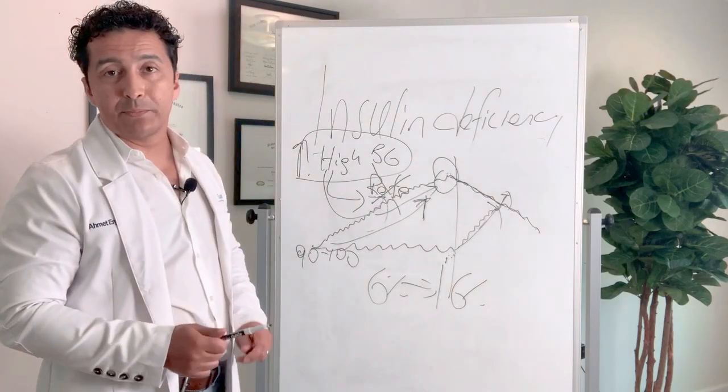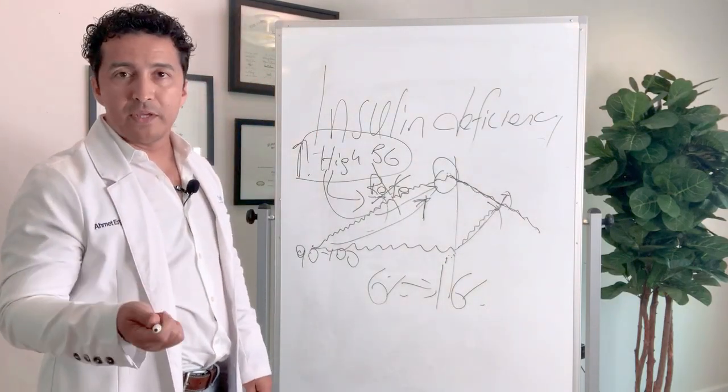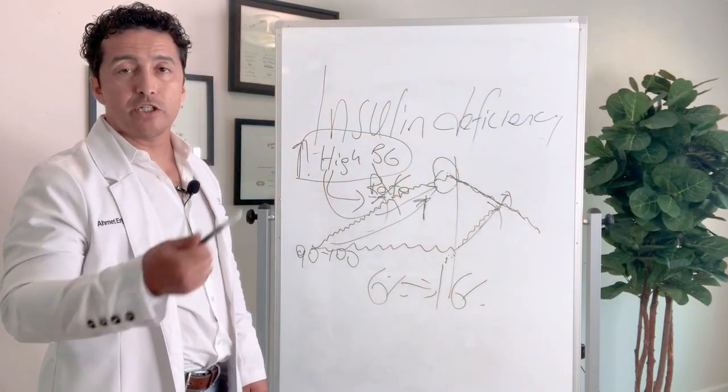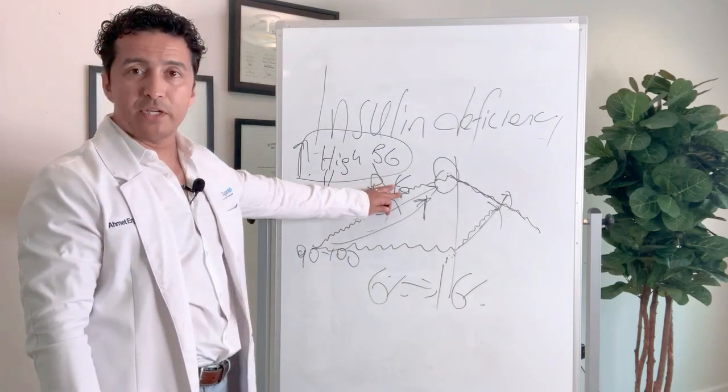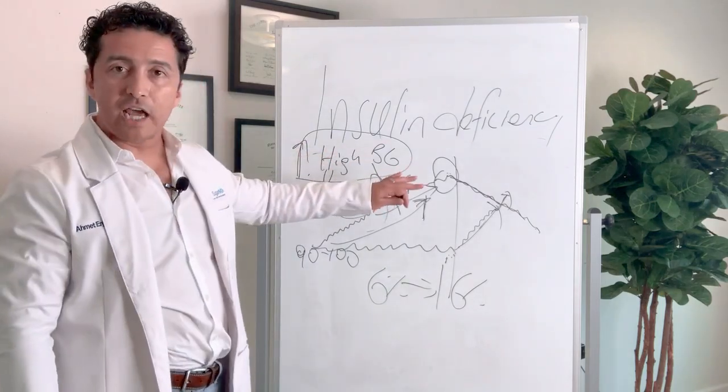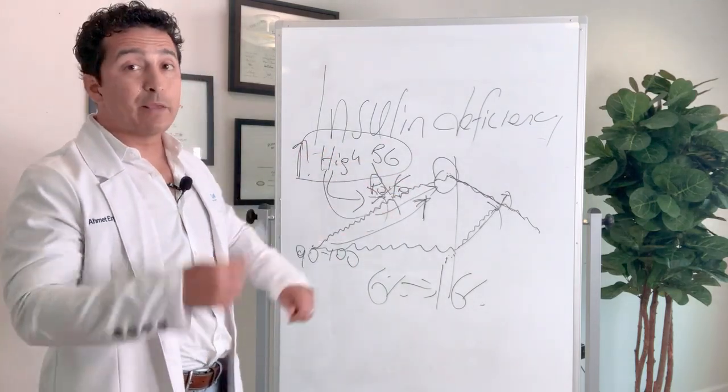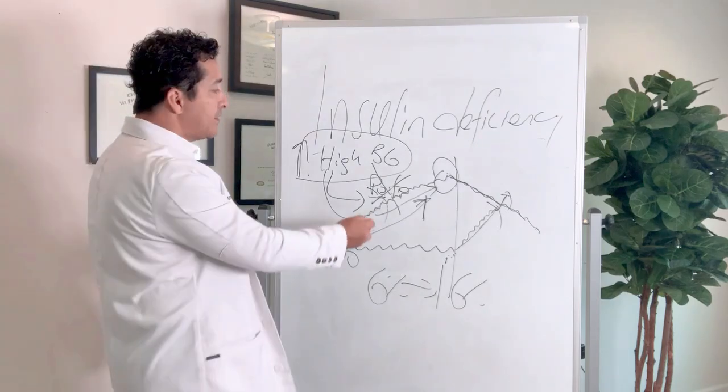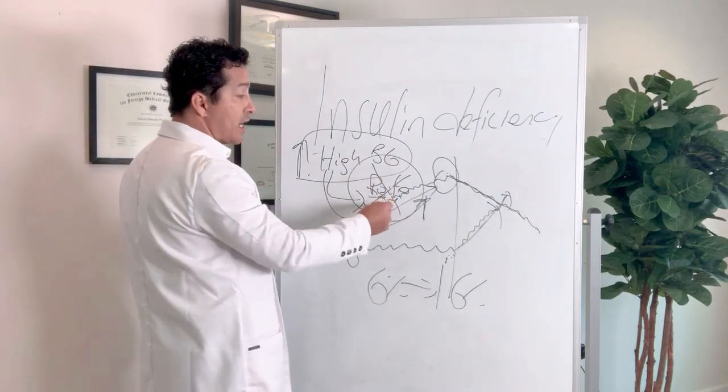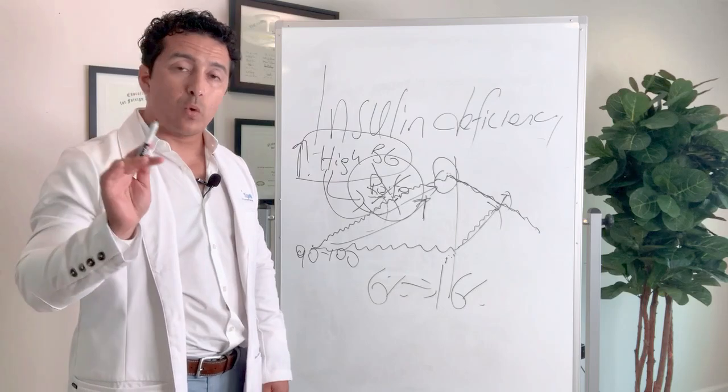And then suddenly, those type 2 diabetic patients start losing weight, start being excessively thirsty, excessive urination. They go to the doctor. They get diagnosed with diabetes. If they change their lifestyle and they start on the medication, they may quickly recover. And then their beta cells will start recovering.